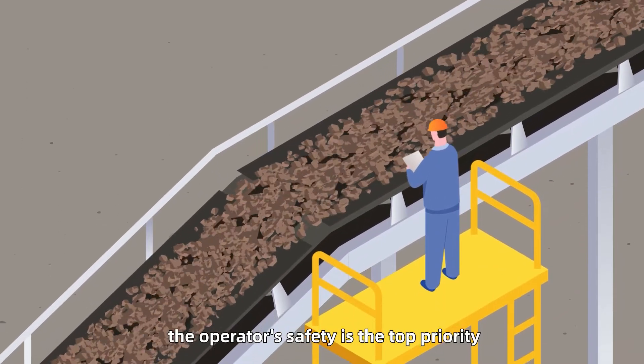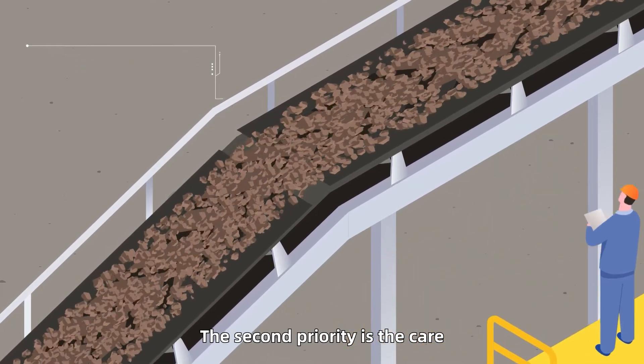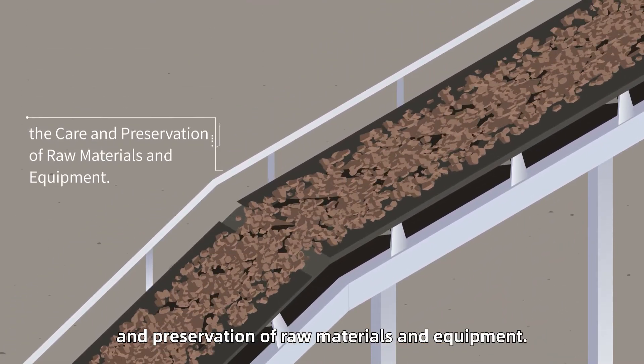In the belt conveyor process, the operator's safety is the top priority. The second priority is the care and preservation of raw materials and equipment.